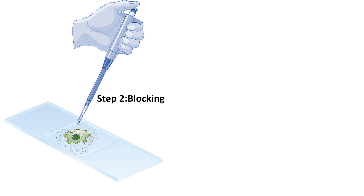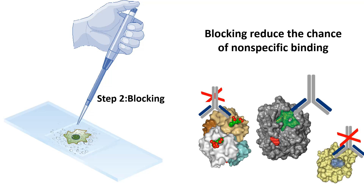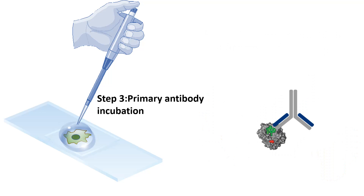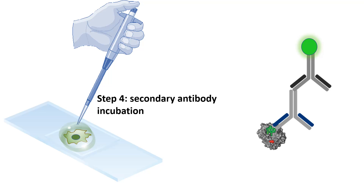The second step is blocking, which is an important step because it reduces the chance of non-specific binding. Then the primary antibody is incubated with the sample; if the epitope is present, the primary antibody is expected to bind to it.